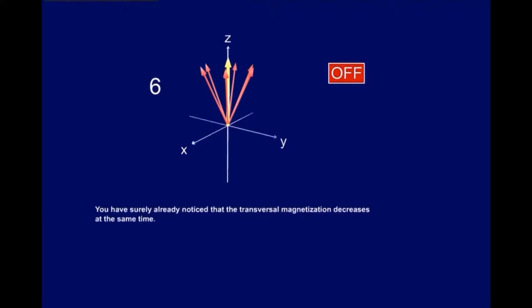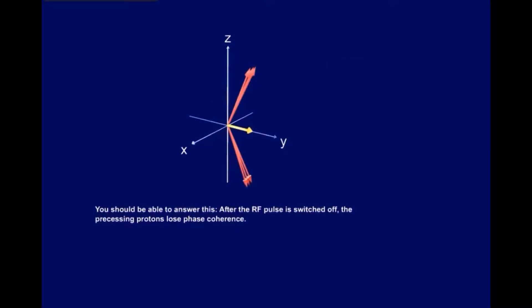You have surely already noticed that the transversal magnetization decreases at the same time. Why is that? You should be able to answer this. After the RF pulse is switched off, the processing protons lose phase coherence.